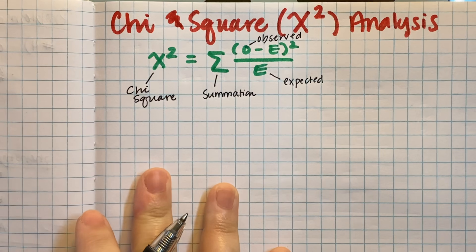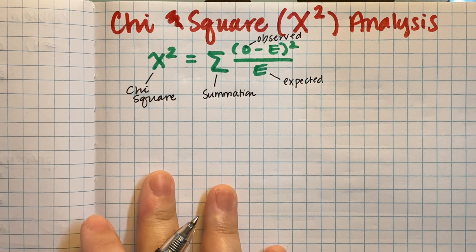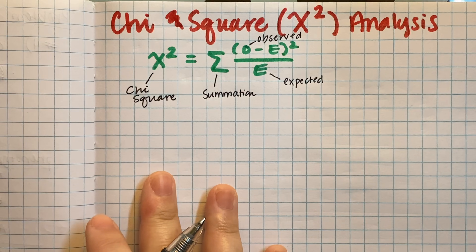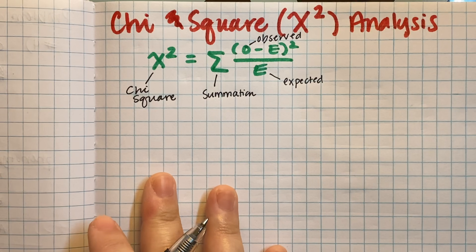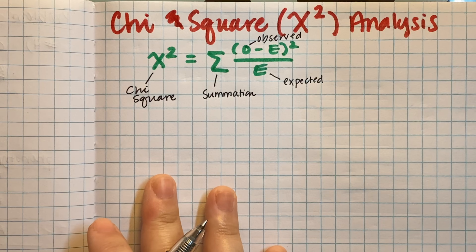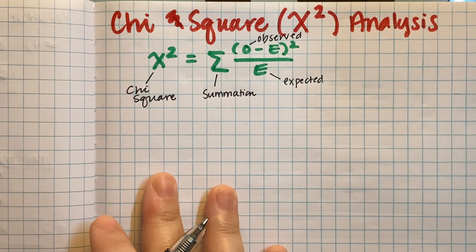Essentially, what a chi-square analysis does is it's testing to confirm a hypothesis. Typically we use it for genetics problems, but it can actually be used for literally any research where you're trying to figure out: does my data match my hypothesis, or is there some other factor in play that maybe I didn't consider before?